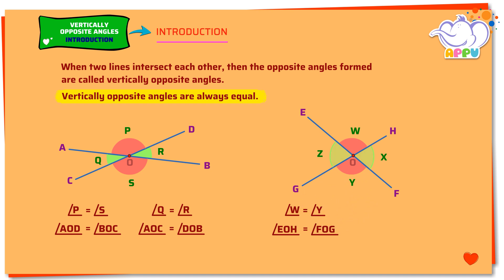Angle Z and angle X are another pair of vertically opposite angles. Angle Z equals angle X.